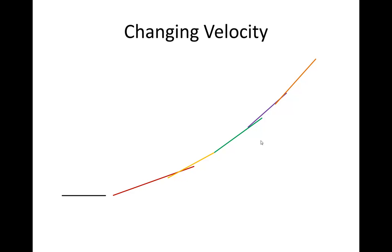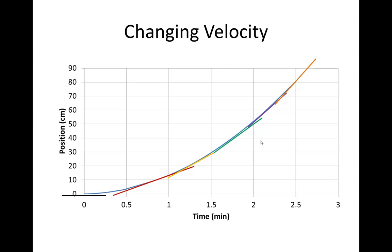You can kind of continue the shape of the graph with the different tangent lines. Remember, velocity is displacement divided by time, so it ends up being the slope of a line segment on your constant velocity graphs. When you have changing velocities and curved position-time graphs, you're going to take the slope of the tangent line instead of the line segment that makes up the graph.